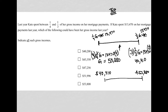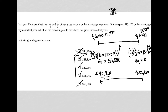Let's see what her gross income could be. $40,200 — no, that's too low, lower than the lowest possibility, so that's out. $43,350 — yes, that's in range. $47,256 — yes, also in range. $51,996 — also in range. And $53,808 is also there. So all four of these last options are correct; only the first one is a little too low.